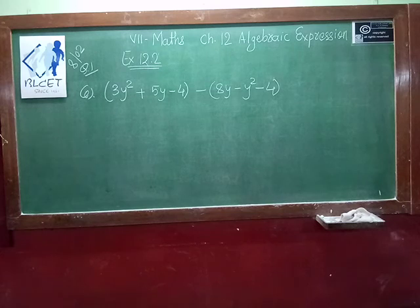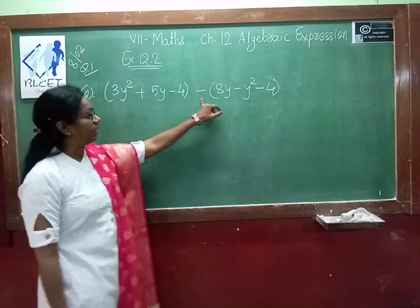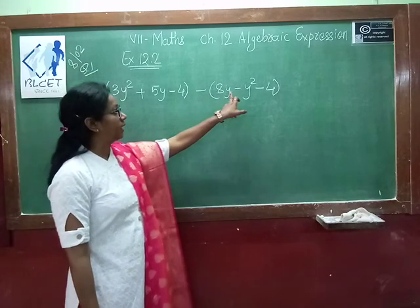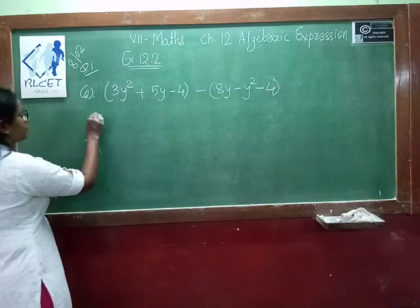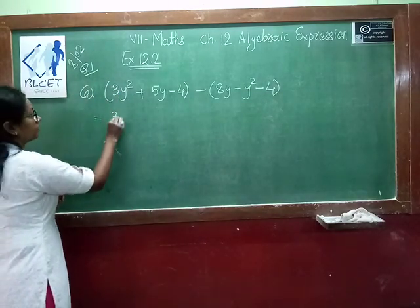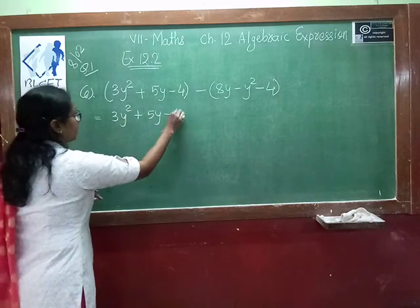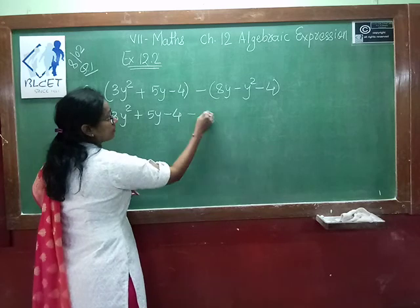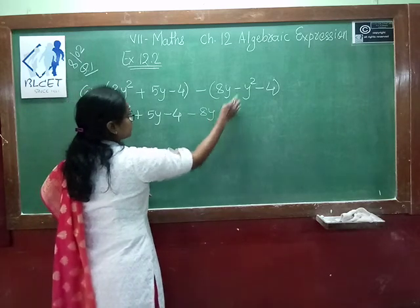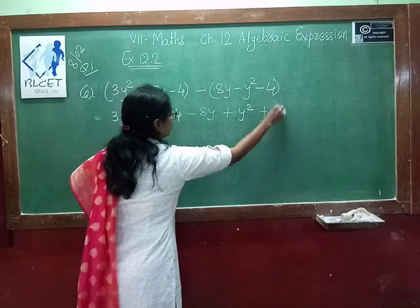Now see this question. 3y² plus 5y minus 4, open the brackets, so the second bracket is minus 8y minus y² minus 4. Which is equal to 3y² plus 5y minus 4. Now open the brackets, so the sign will be changed.